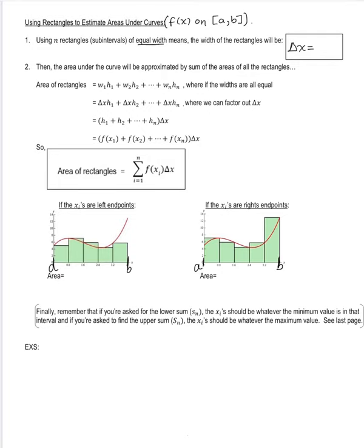To figure out the width of our rectangles, it's going to be the full length of that interval, found by computing the right endpoint b minus the left endpoint a, and then dividing by however many rectangles we want, which is n. So delta x equals b minus a over n.